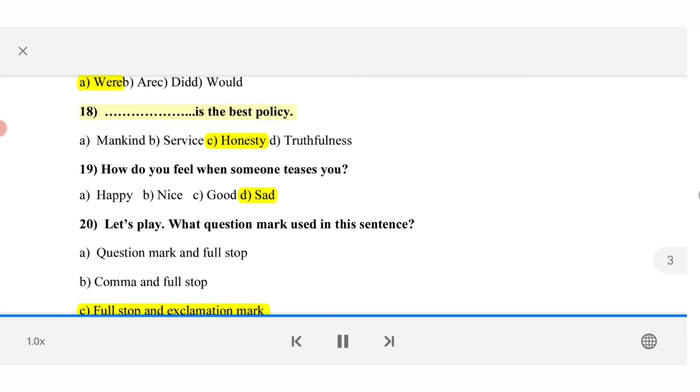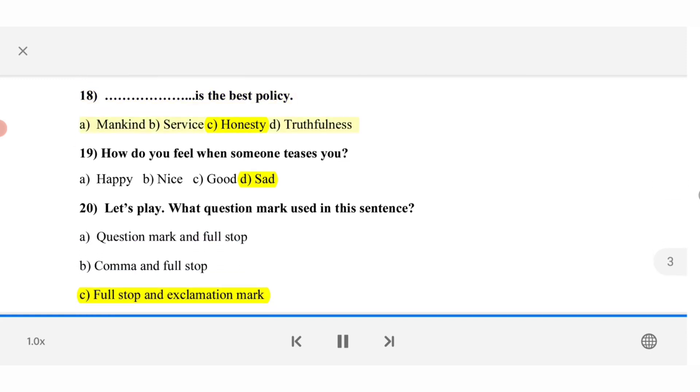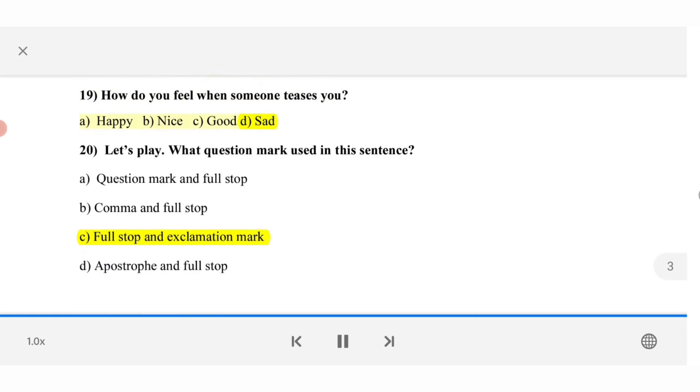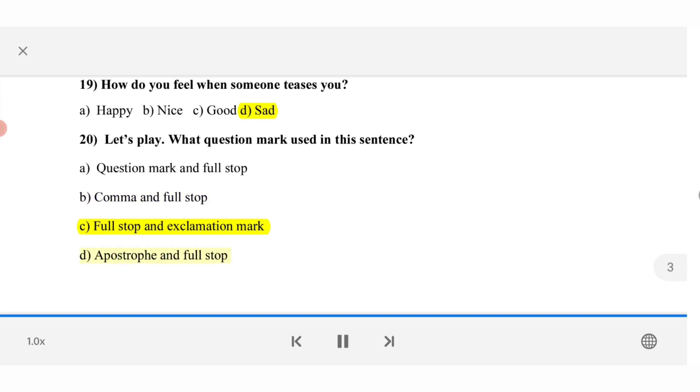18. Is the best policy. A. Mankind. B. Service. C. Honesty. D. Truthfulness. 19. How do you feel when someone teases you? A. Happy. B. Nice. C. Good. D. Sad. 20. Let's play. What question mark used in this sentence? A. Question mark and full stop. B. Comma and full stop. C. Full stop and exclamation mark. D. Apostrophe and full stop.